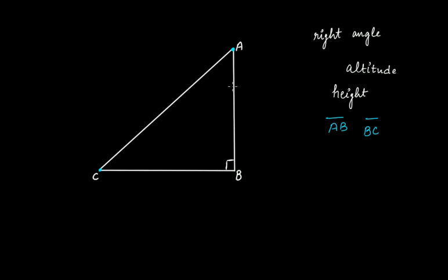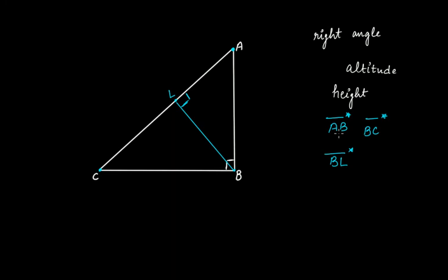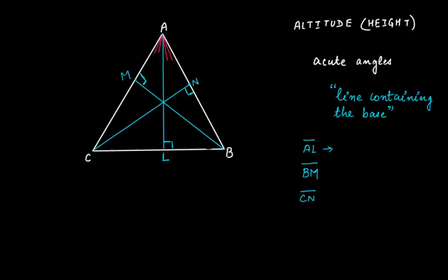The remaining vertex is B. If you draw a line segment from B that makes a right angle on side AC, let's say it meets at point L, then line segment BL is the third altitude. So in this right triangle we also have three altitudes — one from each vertex.